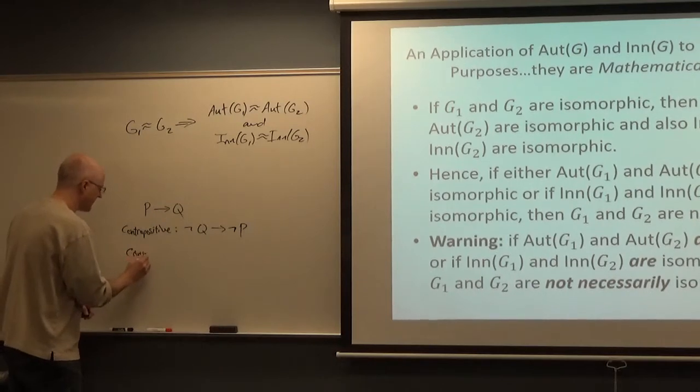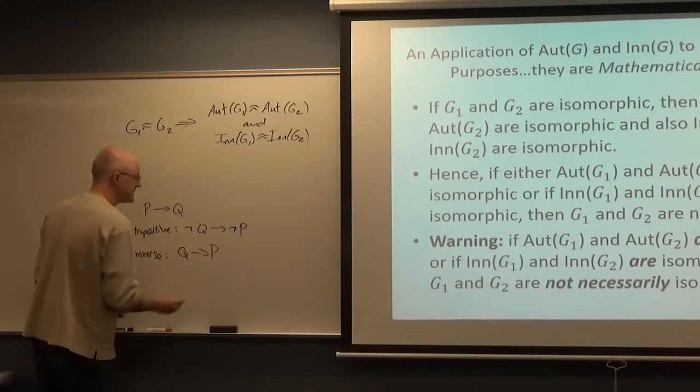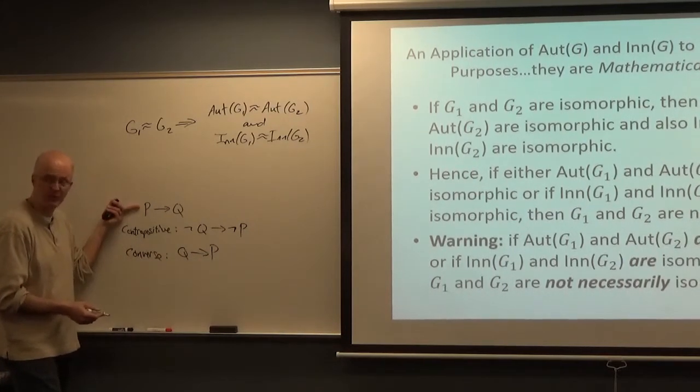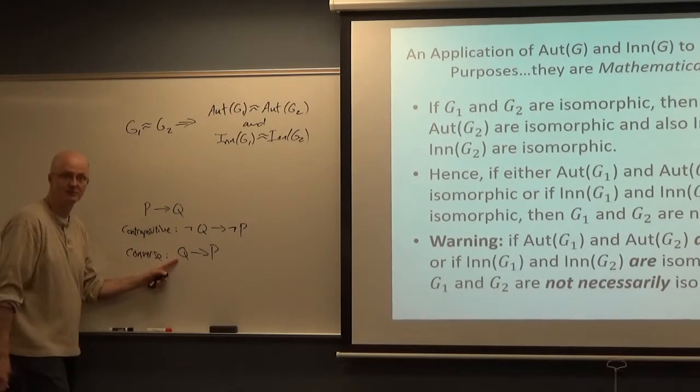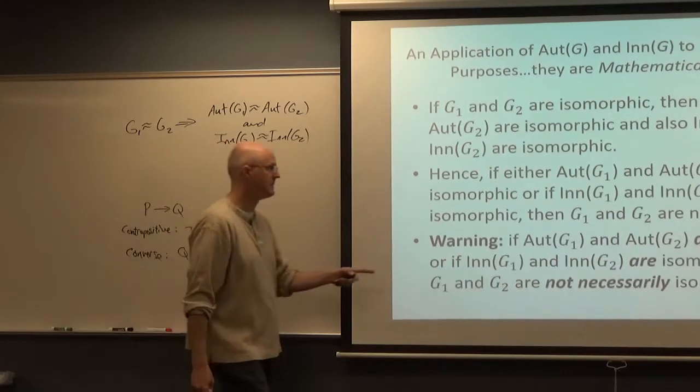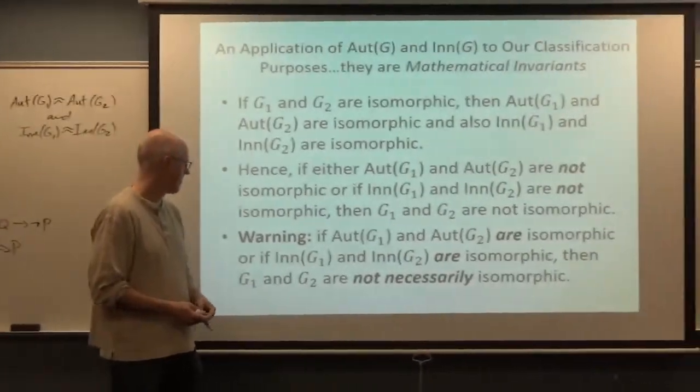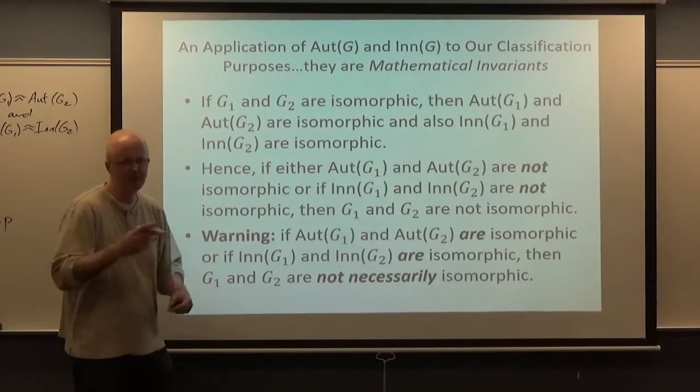The converse, however, is not equivalent. q implies p. If this implication is true, this may or may not be true. And in this context, it's not true. There are examples where Aut(G1) and Aut(G2), for example, are isomorphic, but G1 and G2 themselves are not isomorphic. Let me give you a quick example.